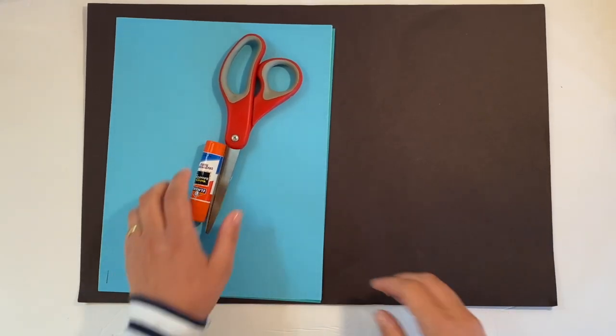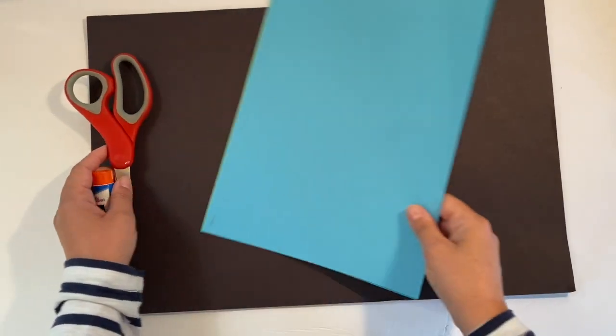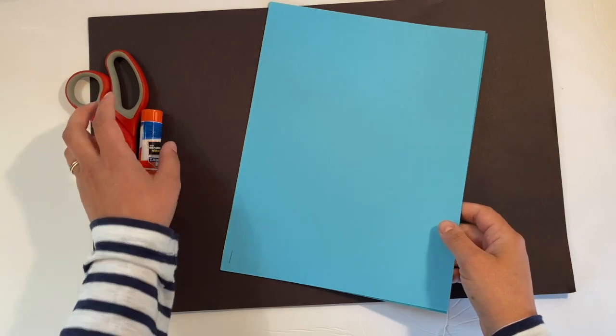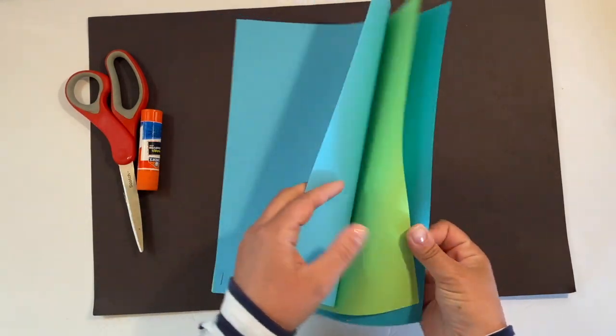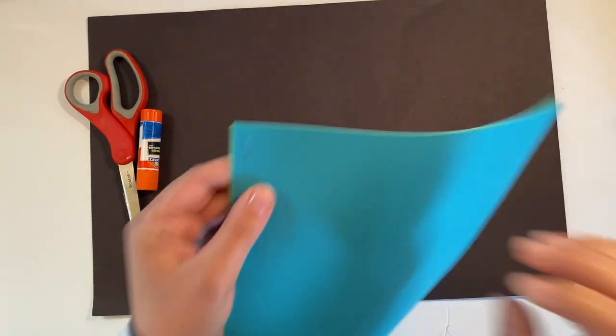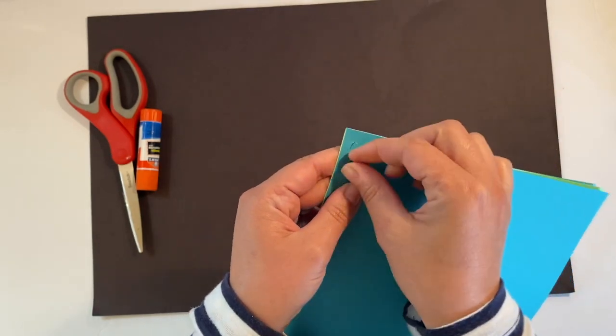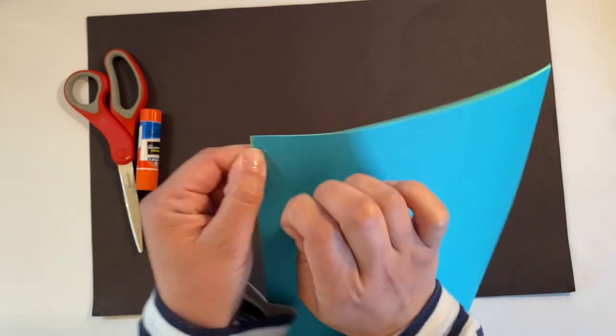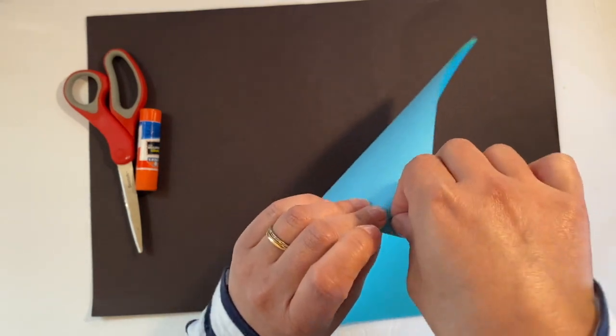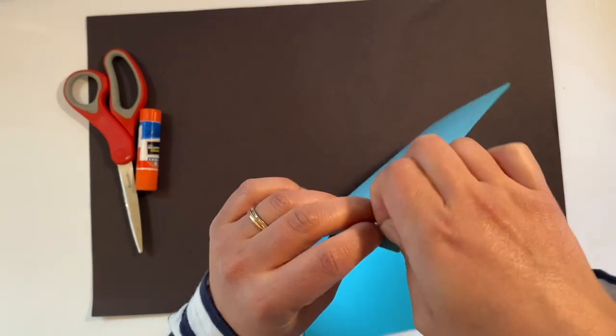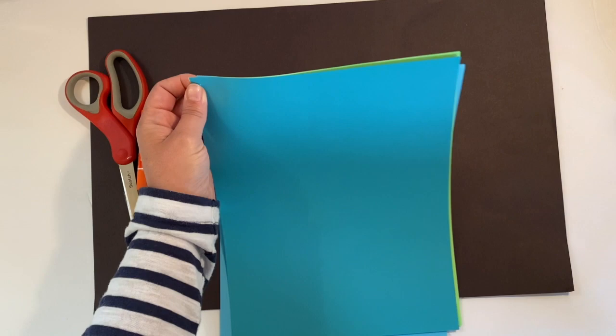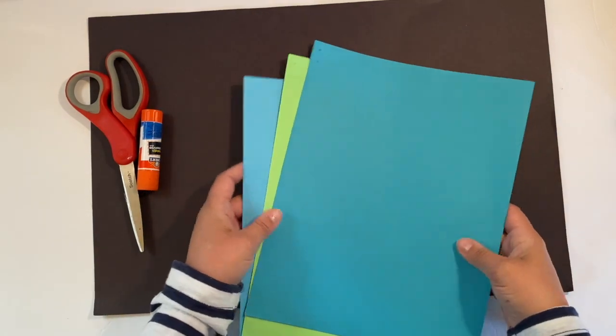Today we're going to be making paper sculptures. You need to get from your art kit a black 18 by 12 cardstock, the little package with three bright colored papers that are all stapled together, plus glue and scissors.